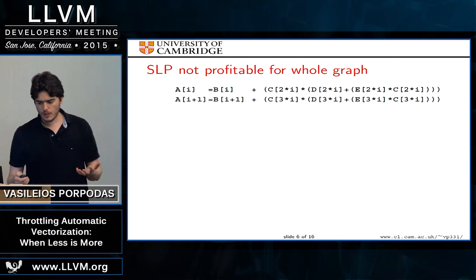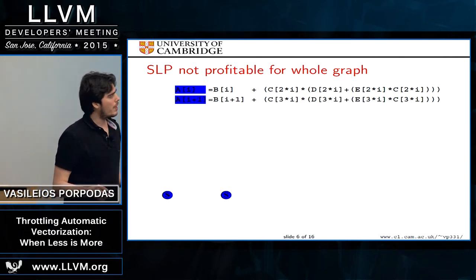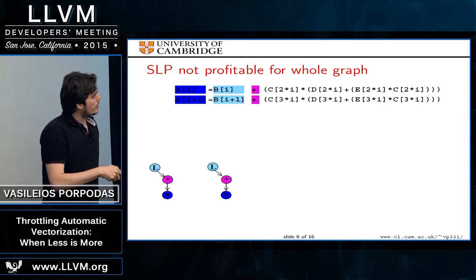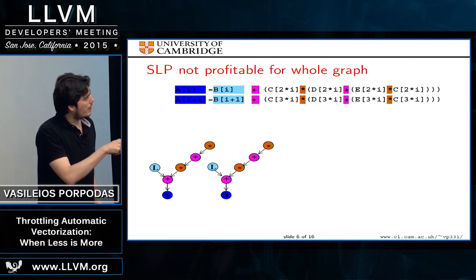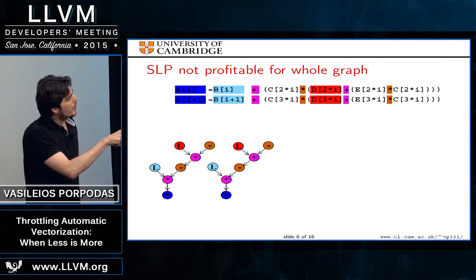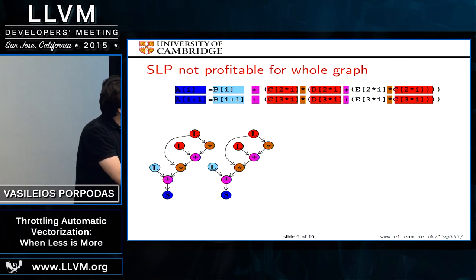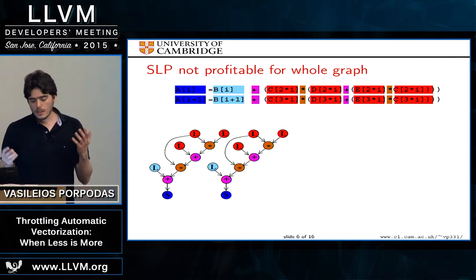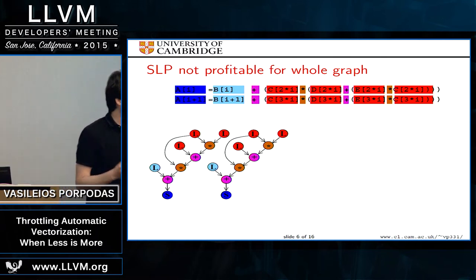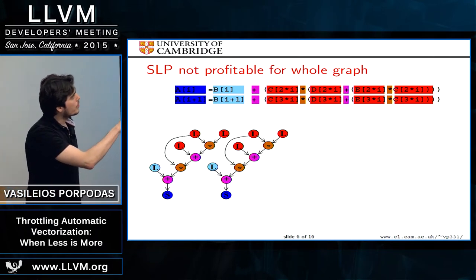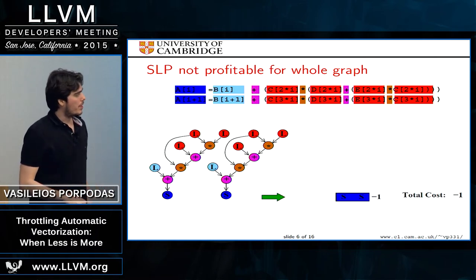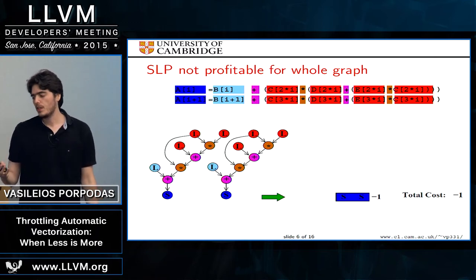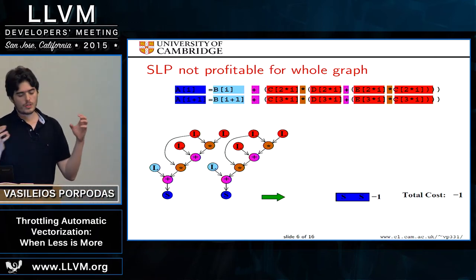The SLP vectorizer requires a dependency graph containing the stores to A, then the additions, loads from B, multiplications, and the unaligned loads from C, D, and E. The vectorizer starts from the seed instructions — the stores to consecutive memory addresses in A — and groups them together. This saves a cost of one by transforming two scalars into one vector instruction, using the cost model where each instruction costs one.